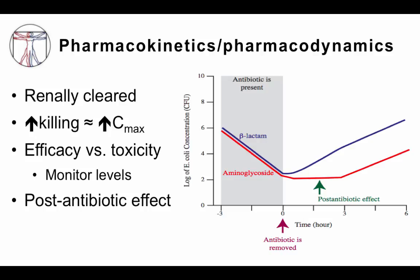Regarding pharmacokinetics and pharmacodynamics: aminoglycosides are cleared by the kidneys, and the pharmacodynamic principle is that the higher the dose of the drug, the higher the concentration you get, and the more killing of bacteria you get. This creates a balance between efficacy and toxicity, so you end up having to monitor levels and find that happy medium.